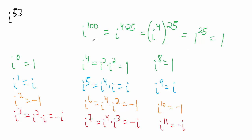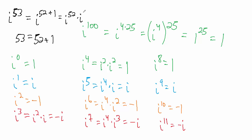We can use that fact to simplify things like i to the 53rd. 53 is 52 plus 1, and 52 is a multiple of four — 13 times 4 is 52. So this equals i to the 52 plus 1, which is i to the 52 times i to the first. i to the 52 is i raised to a multiple of four, so that's just one. Then i to the first is just i, so our result is just i.